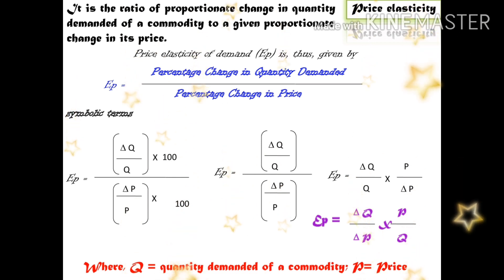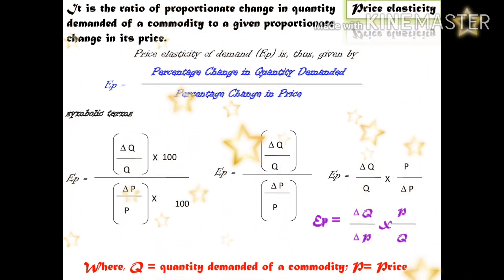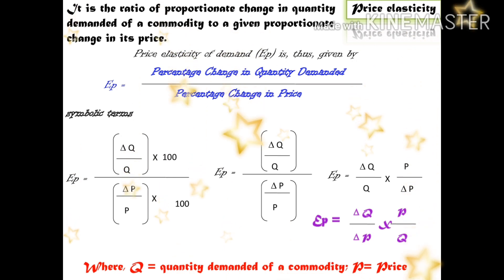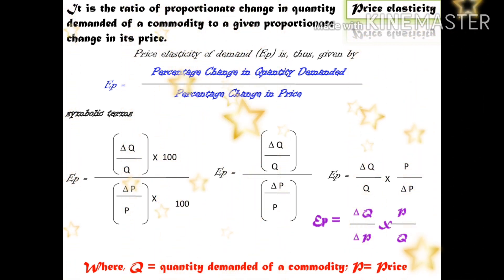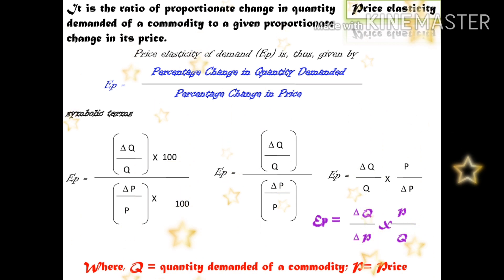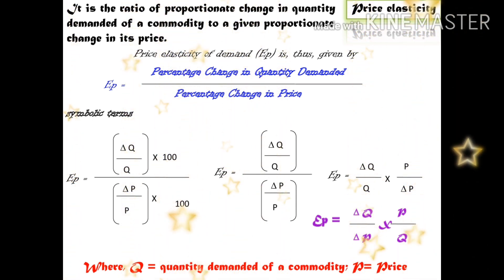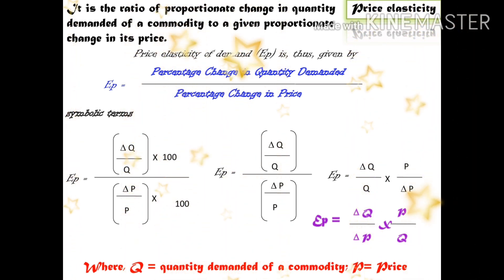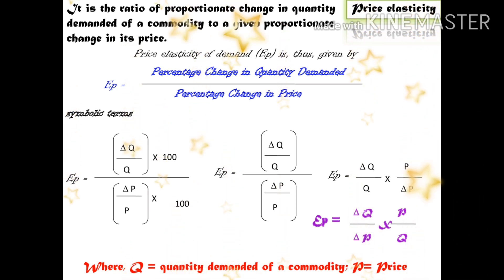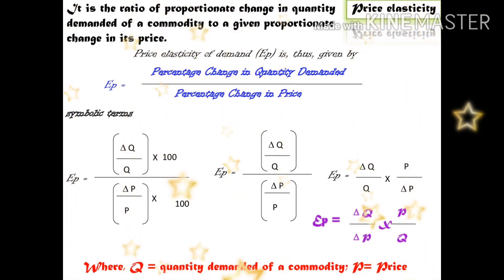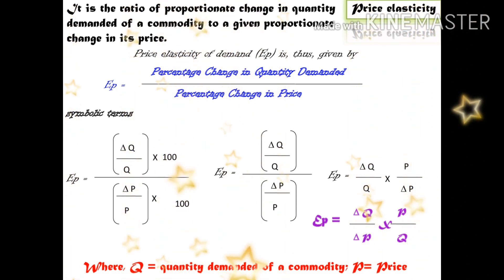Price elasticity is the ratio of the proportionate change in quantity demanded of a commodity to a given proportionate change in its price. That means price elasticity equals the percentage change in quantity demanded divided by the percentage change in price. This is the symbolic formula.